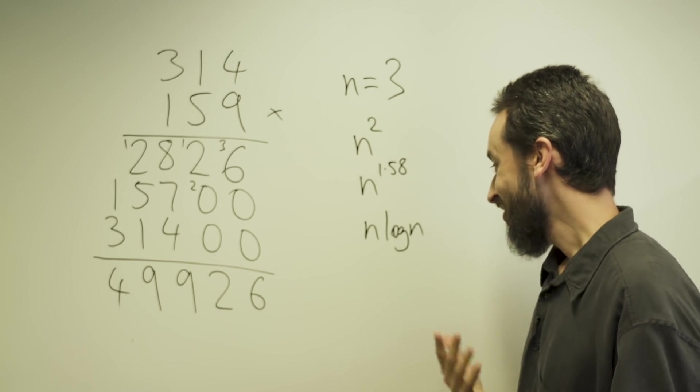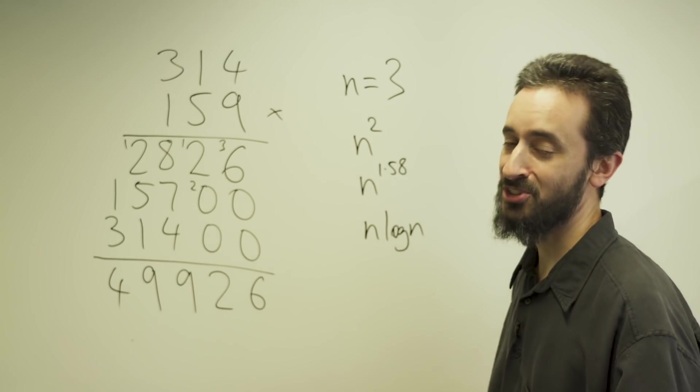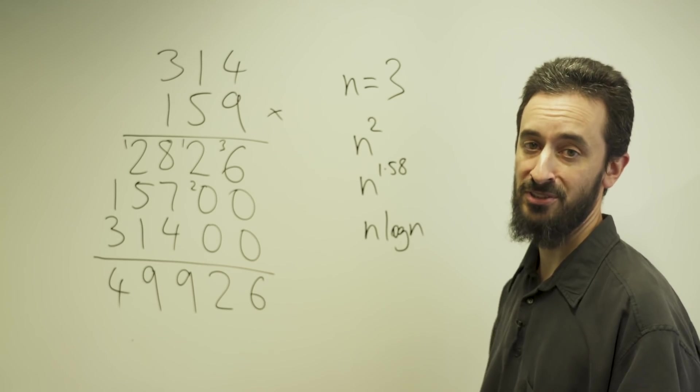The question is, how big does n have to be for this algorithm to actually be faster than the previous algorithms? The answer is we don't know. It could be billions of digits, it could be trillions, it could be much bigger than that. We really have no idea at this point.